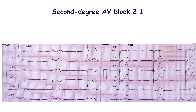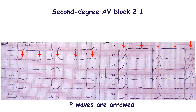The recorded ECG showed second degree AV block with 2-to-1 conduction. At first look, this appears to be first degree AV block on the background of sinus bradycardia. However, there are two P waves before every QRS complex. The first of them merges with the T wave, but in some leads it is obvious.